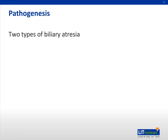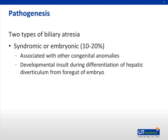Two types of biliary atresia have been described. The first is syndromic or embryonic, which represents 10 to 20% of cases. This type of biliary atresia is associated with other congenital anomalies. It is thought to be due to a developmental insult during differentiation of the hepatic diverticulum from the foregut of the embryo.